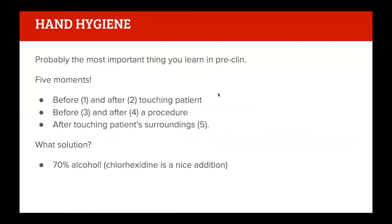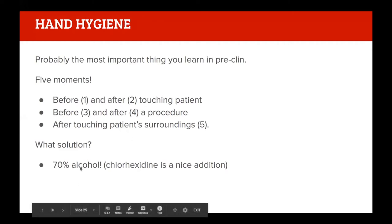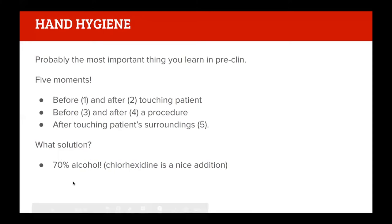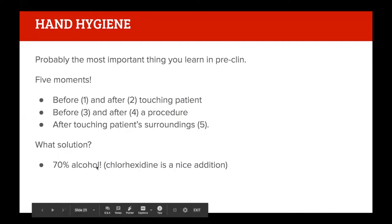You need to know the five moments of hand hygiene. The way to remember it is: two befores and afters, and one after. Before and after touching a patient, before and after a procedure, and after touching the patient's surroundings. This is probably the most consequential thing you'll learn in your pre-clinical years - without good hand hygiene, modern medicine just wouldn't be where it is today. Use a good 70% alcohol solution, sometimes with chlorhexidine added.